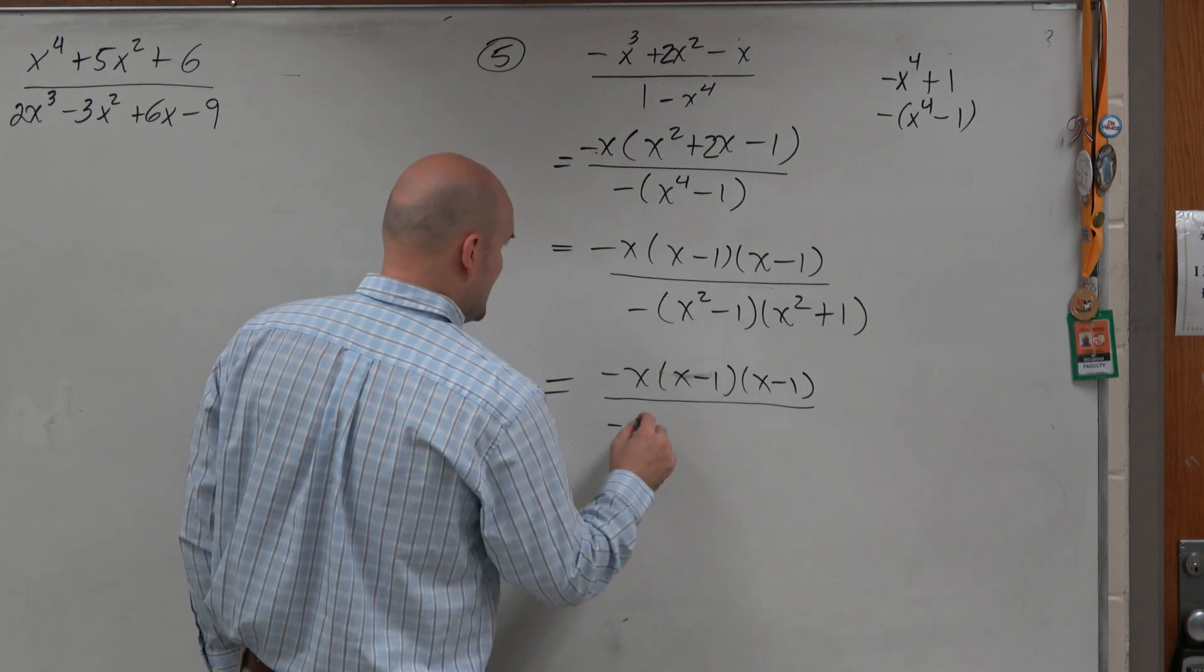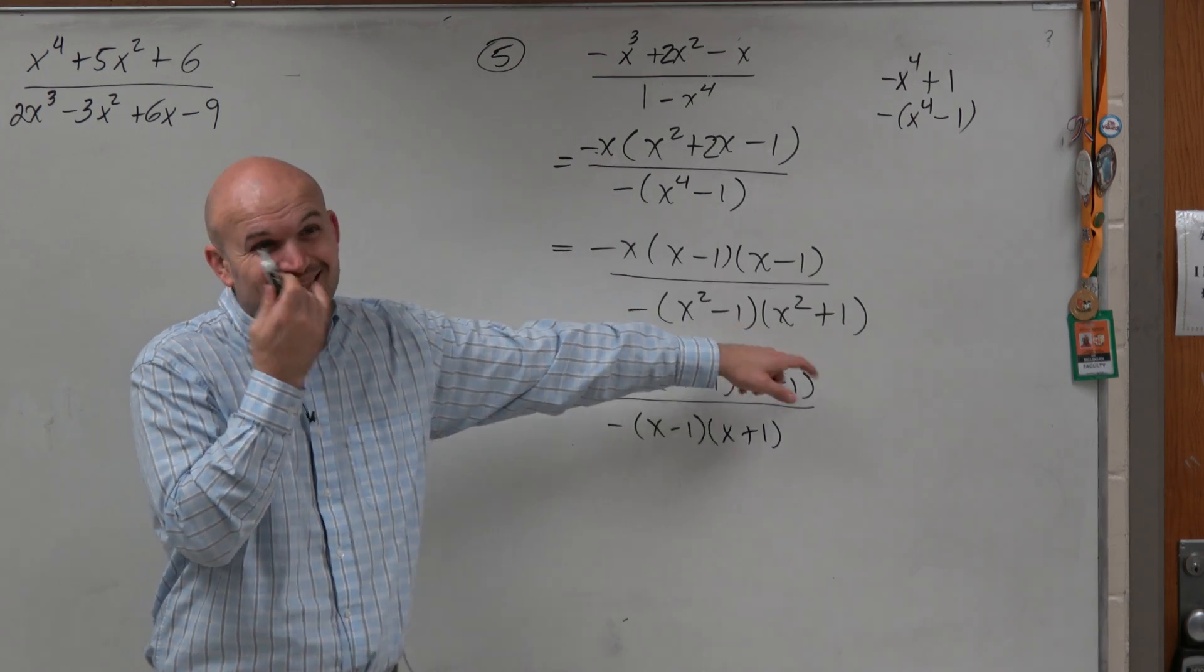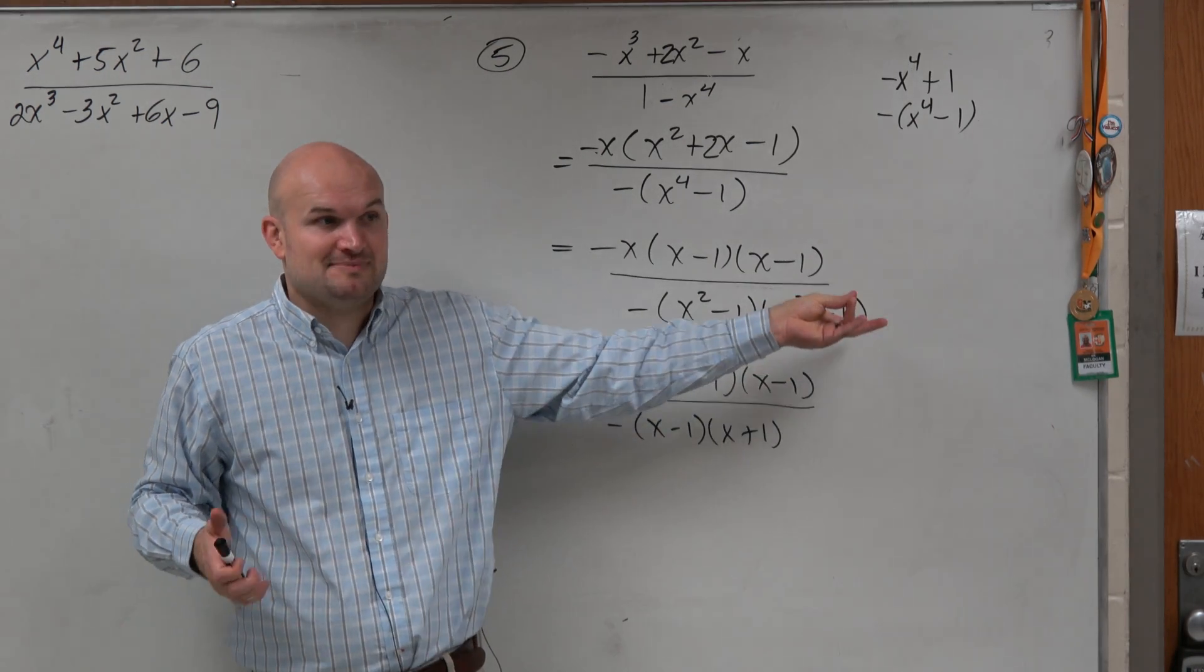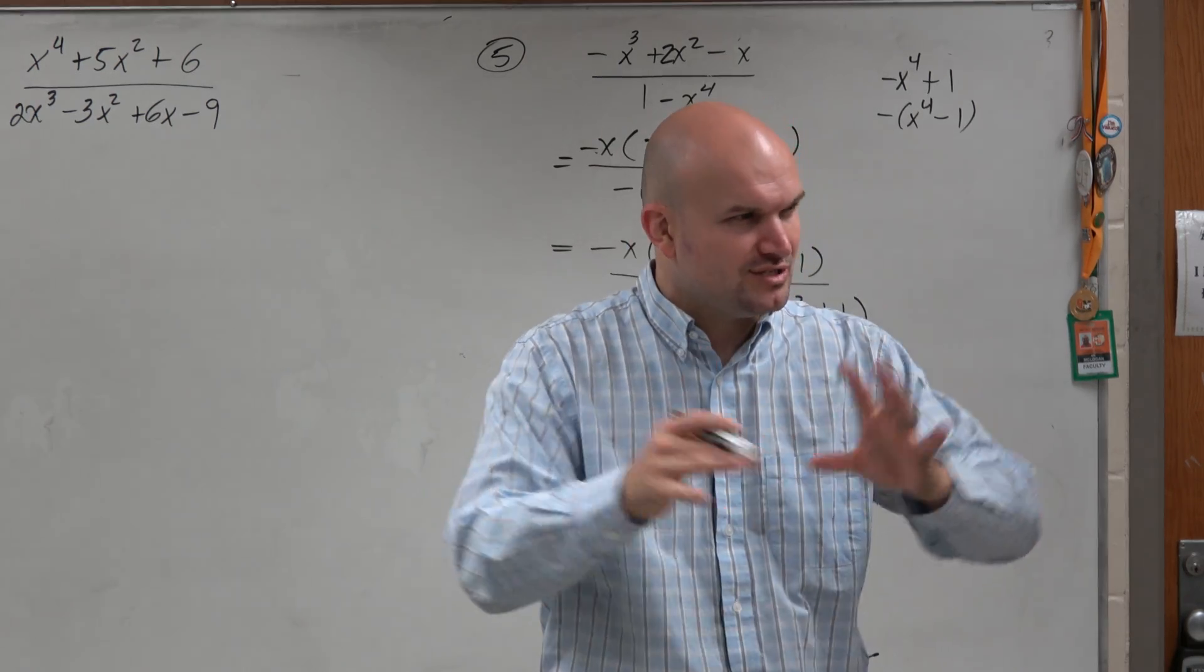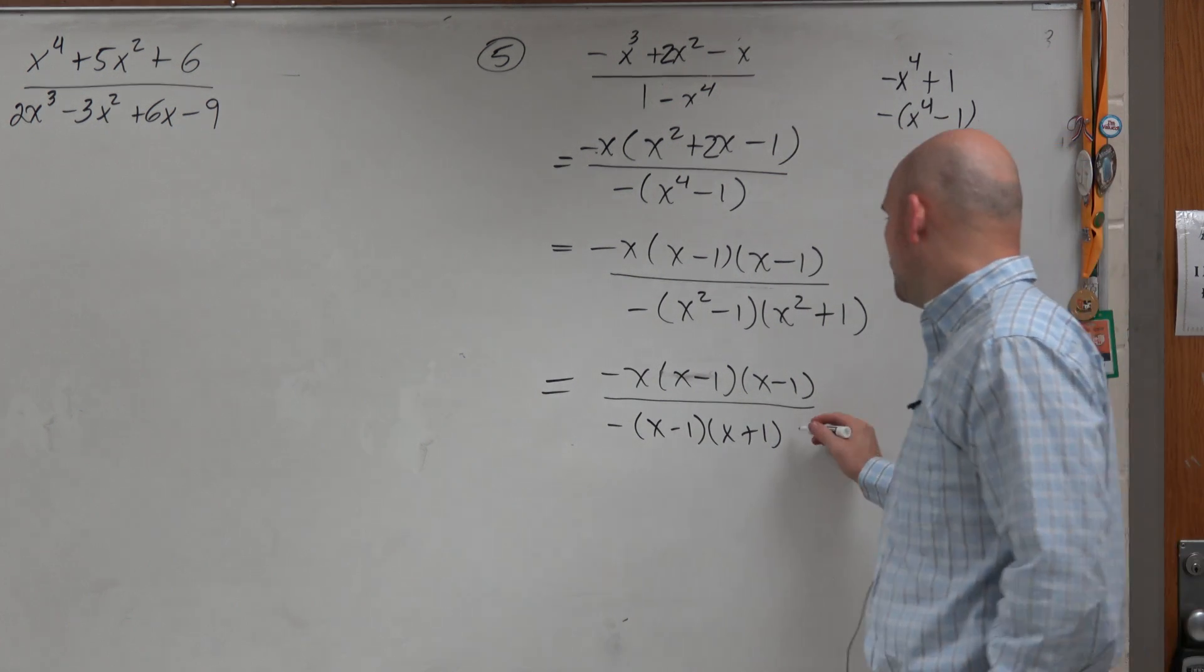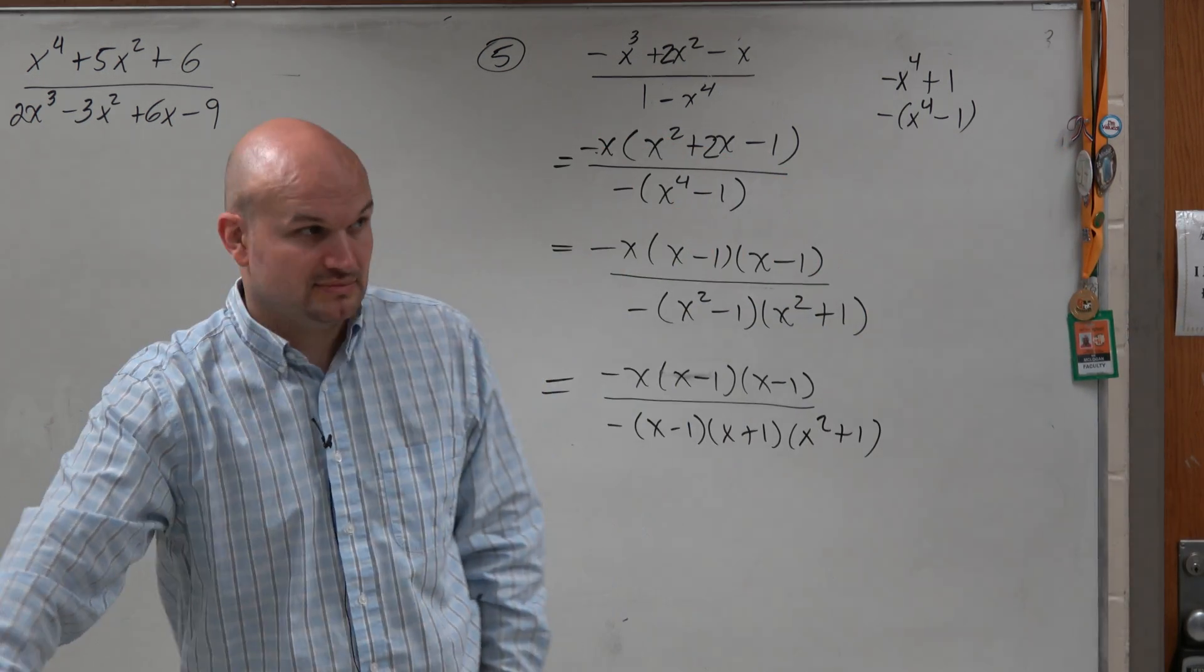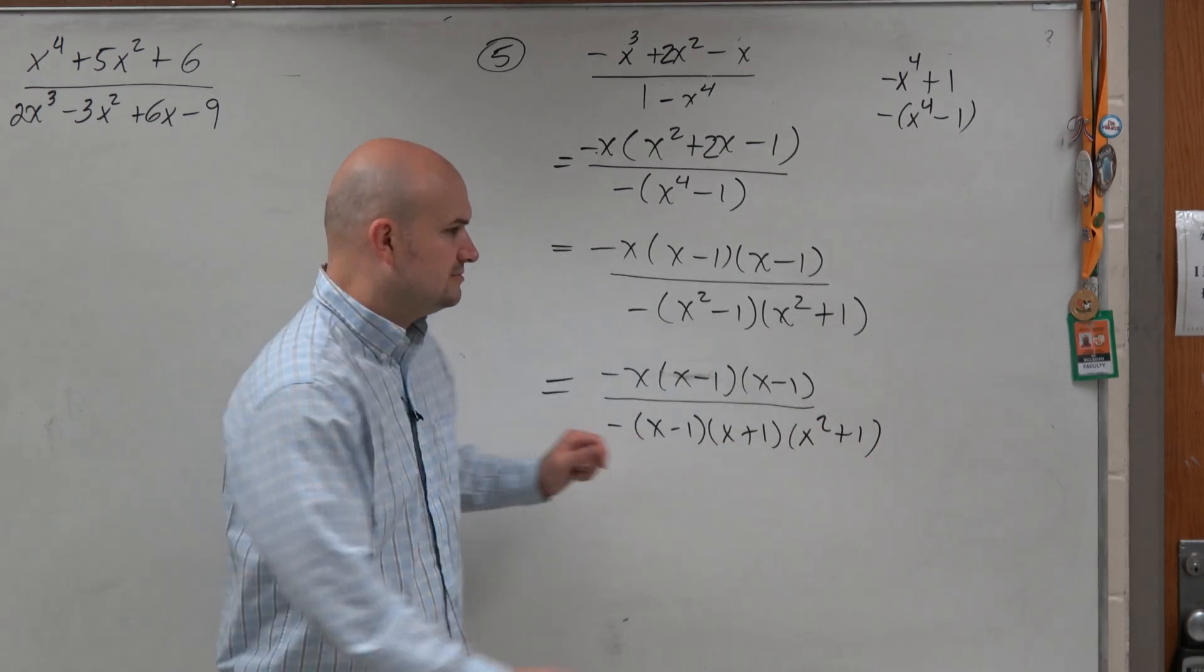So I have negative x times x minus 1 times x minus 1, all over negative x minus 1 times x plus 1. Now could I further factor this down? I could, across imaginary numbers. I could do that as x plus i, x minus i. But again, when we're looking for our domain, when we're looking for these restrictions, we're going to only be focused on real numbers. So there's really no other need to further this down. Now I have everything in my factored form, at least what I need.